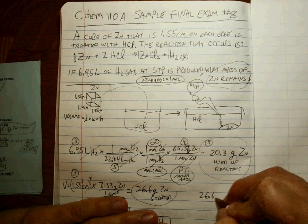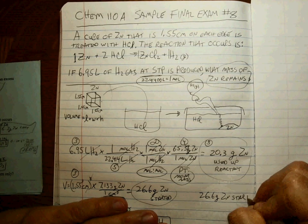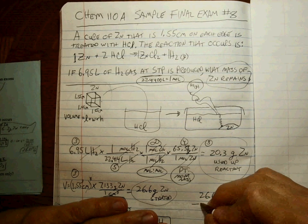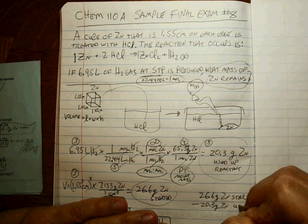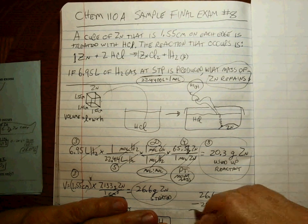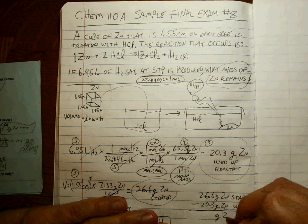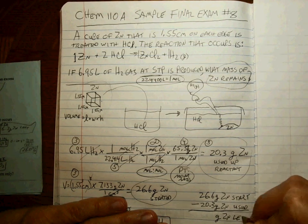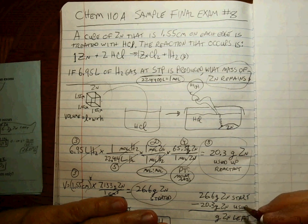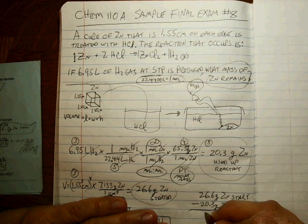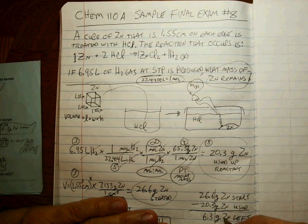So this is how much you started with and this is how much you used up. The difference between the two tells you how much is left: 26.6 grams of zinc at start, minus 20.3 grams of zinc used, gives you the grams of zinc remaining. That math gives 6.3 grams.